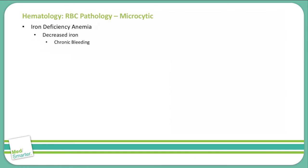Chronic bleeding is different than acute bleeding. With acute bleeding, you will not see a decrease in iron in the body — you have a total decrease in the volume of the blood, and it is a short-term problem. When you have chronic bleeding over long periods of time, that's when you see issues with a decrease in iron in the body.